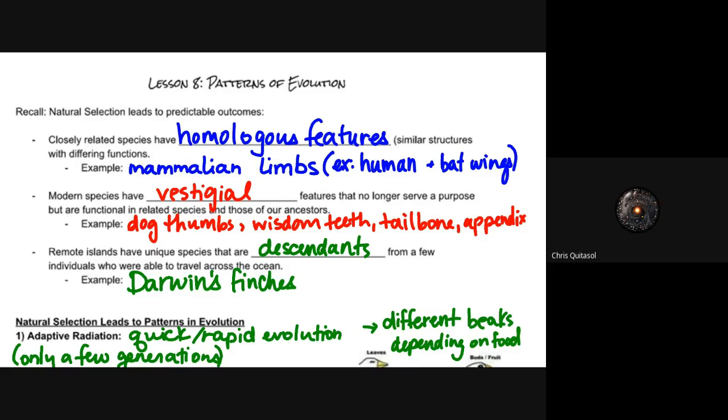Recall that natural selection leads to several predictable outcomes. Closely related species have homologous features, those similar structures with different functions. Specific examples being mammalian limbs, humans and bat wings. Humans and bats are both mammals; the structure of the limbs are the same even though they might have different functions. Modern species have vestigial features, structures or systems that no longer serve a purpose but were functional in the related species of the ancestors that we branched off from. Dogs have thumbs, for lack of a better word. Humans have wisdom teeth, tailbones, and appendixes.